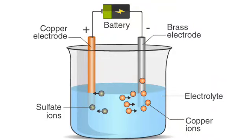Fourth lesson: Chemical Effect of Electric Current. There are certain solid materials which allow electricity to pass through them — such materials are called conductors of electricity. Iron, copper, and aluminium are such materials that conduct electricity. Materials which do not allow electricity to pass through them are called bad conductors or insulators. Rubber and plastic do not conduct electricity.